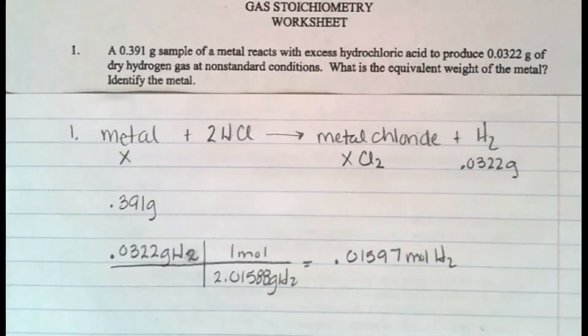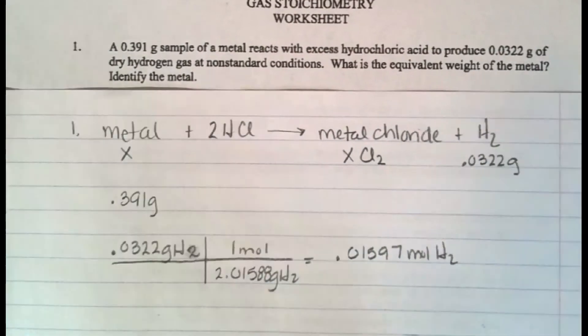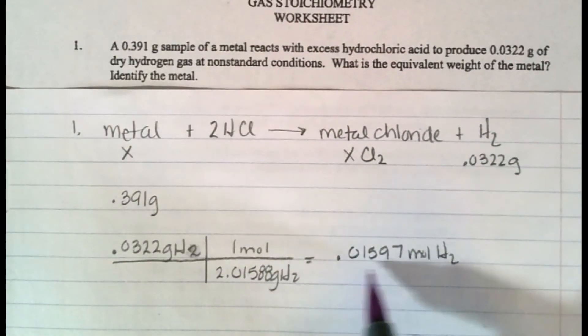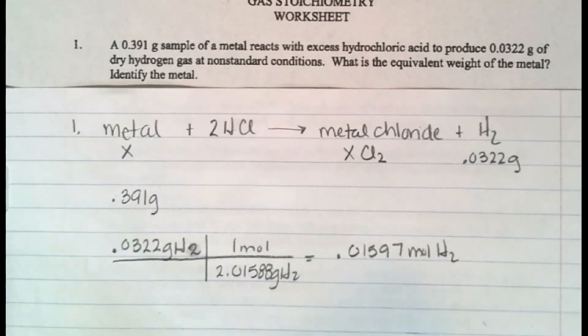Now, how is that going to help me? Well, I can look at this balanced equation and know that it's a one-to-one. So I'm going to get 0.01597 moles of that metal, right, one-to-one.